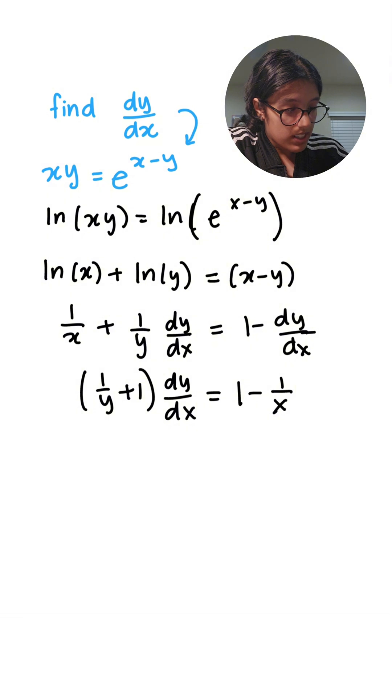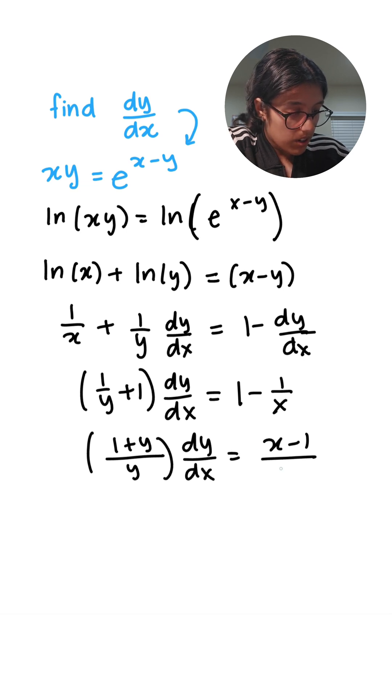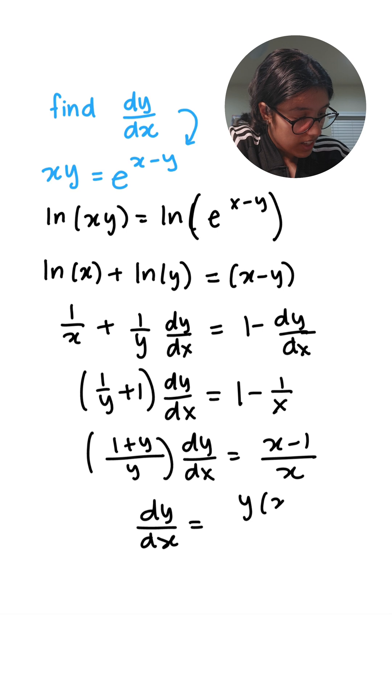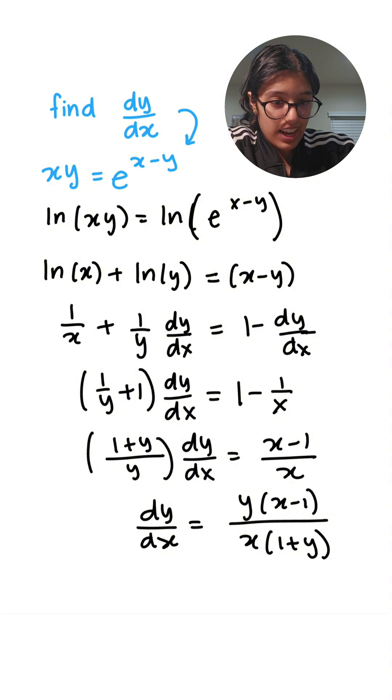I'm going to simplify both sides. I'm going to have one plus y over y dy over dx, taking common denominator. x minus one over x. dy over dx is equal to y times x minus one over x times one plus y. And that is our final answer.